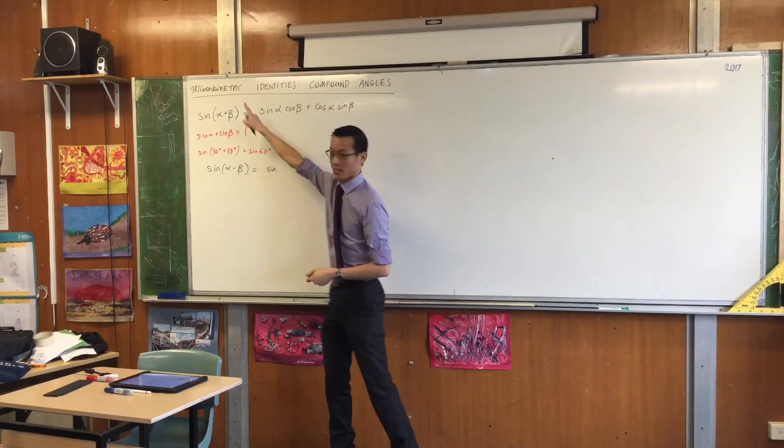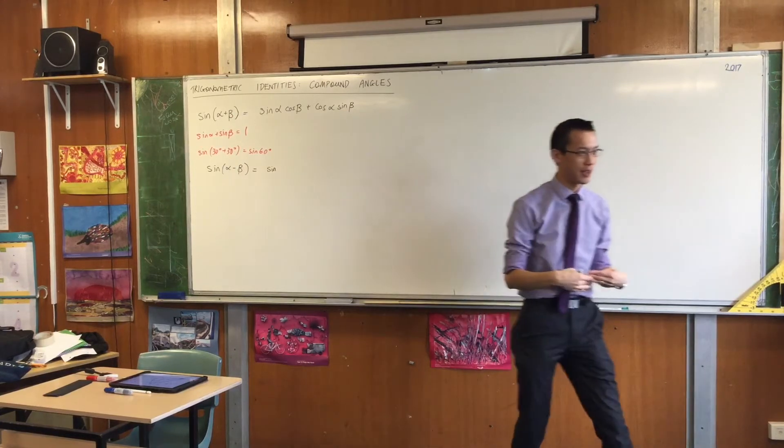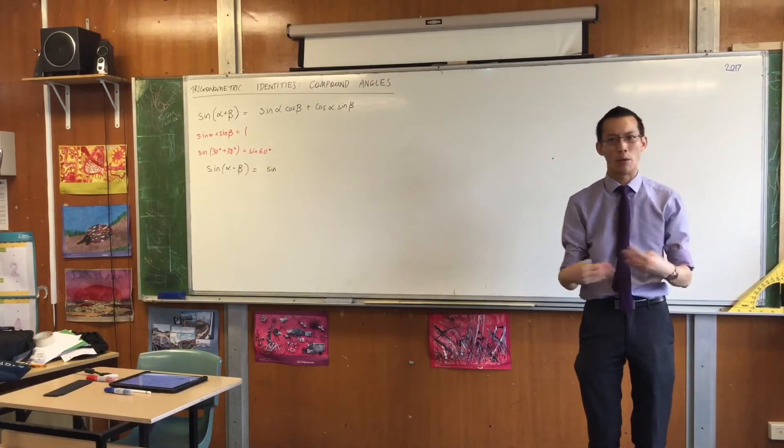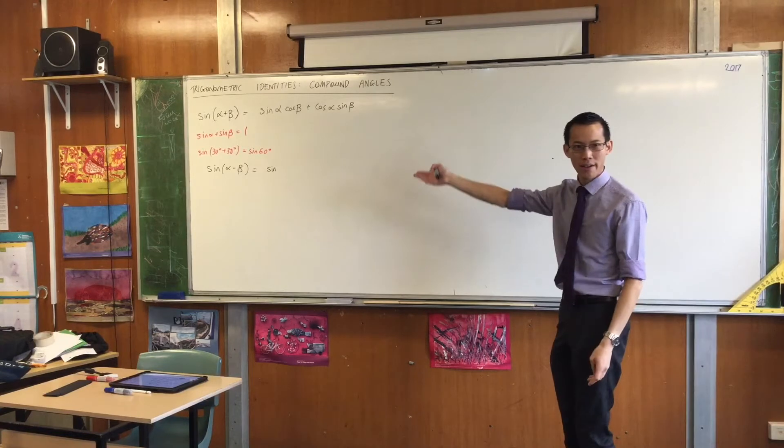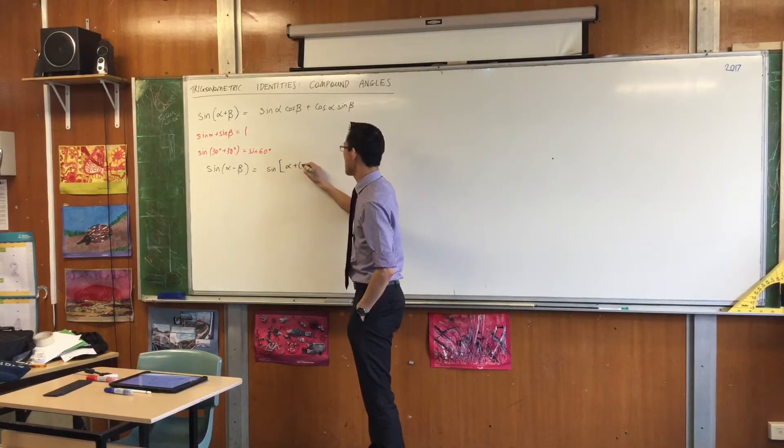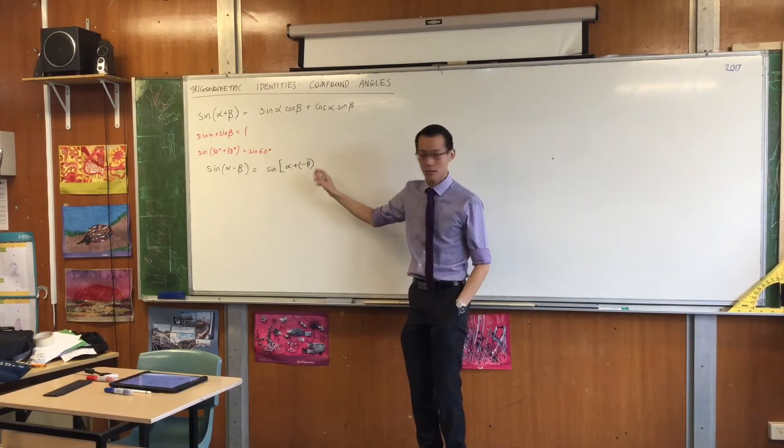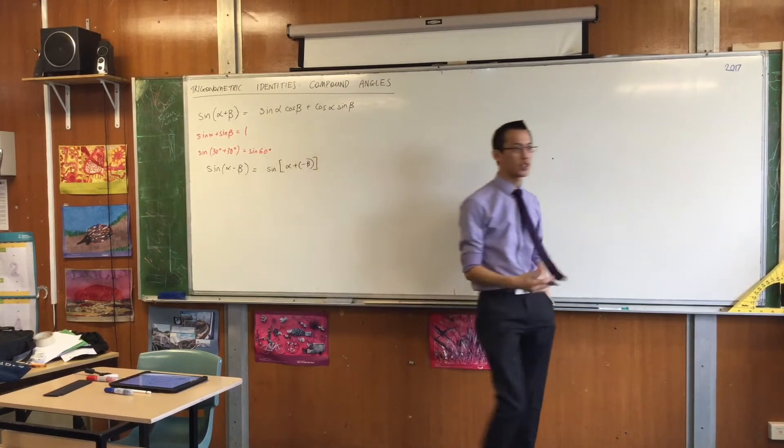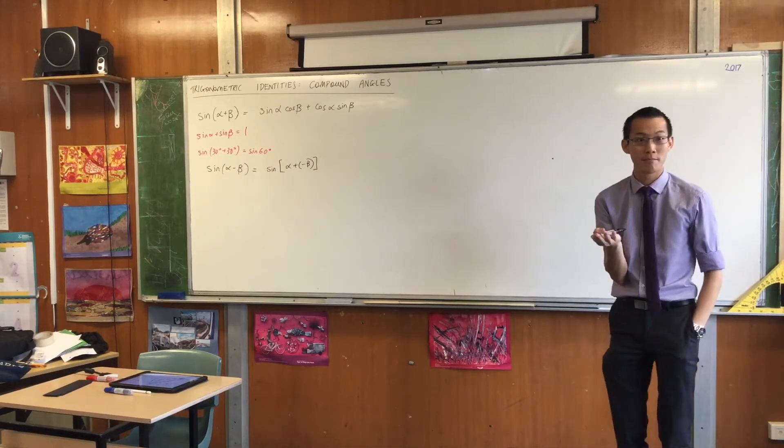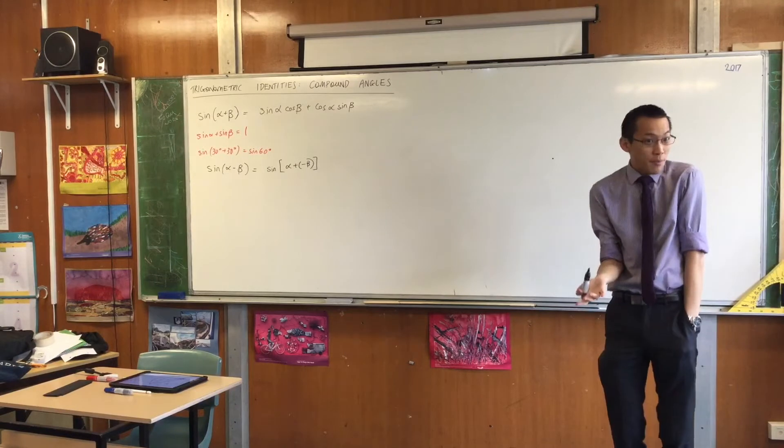So, this is a sum. This is a difference. I'm going to write the difference as a sum. Like, what do I have to add to alpha in order to make it alpha minus beta? And the answer is, if I add negative beta, those are the same. Do you agree? The reason why this is useful is because now I can use everything in the top line. Right? I'm just going to swap out all the betas for negative betas.